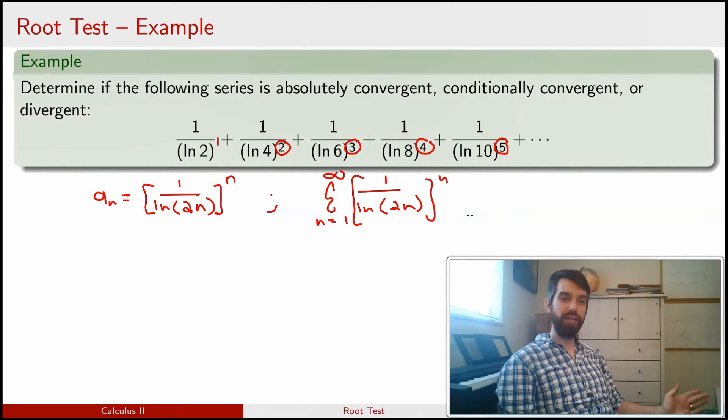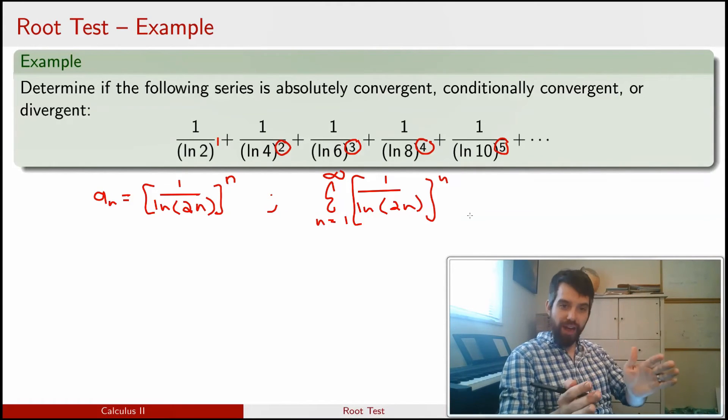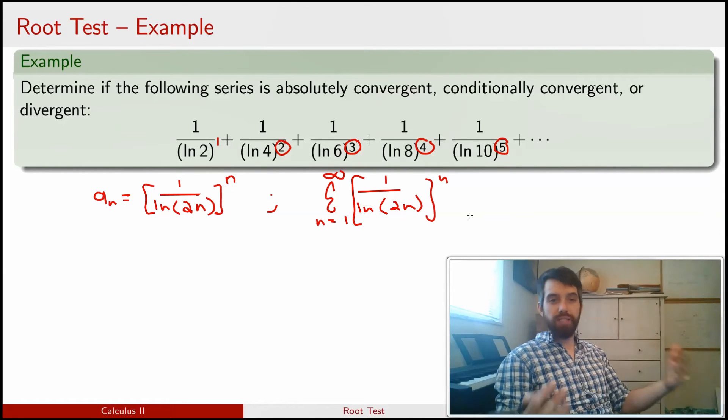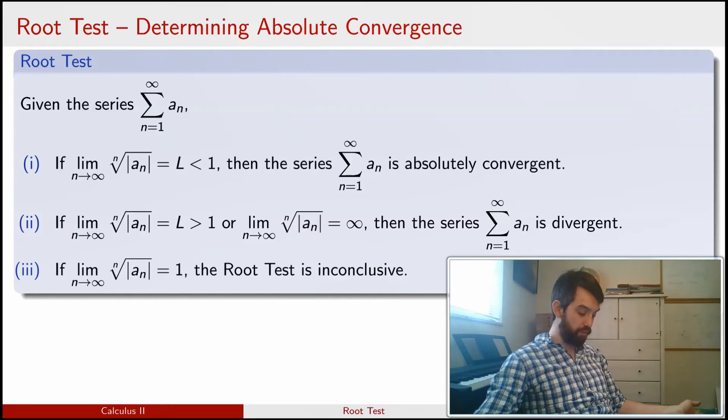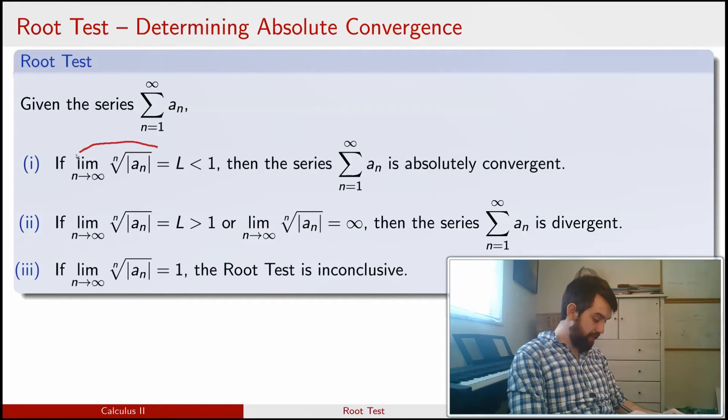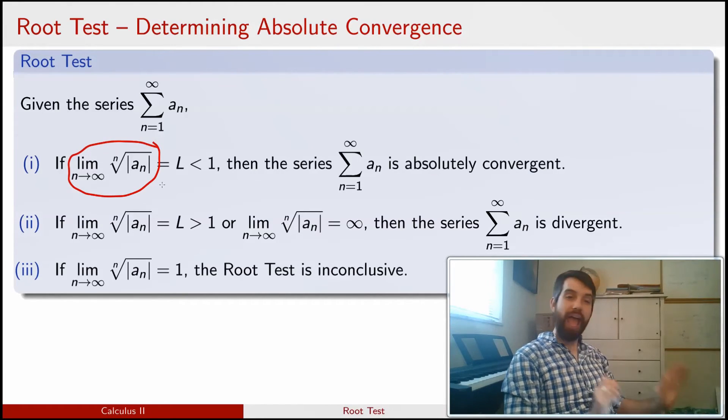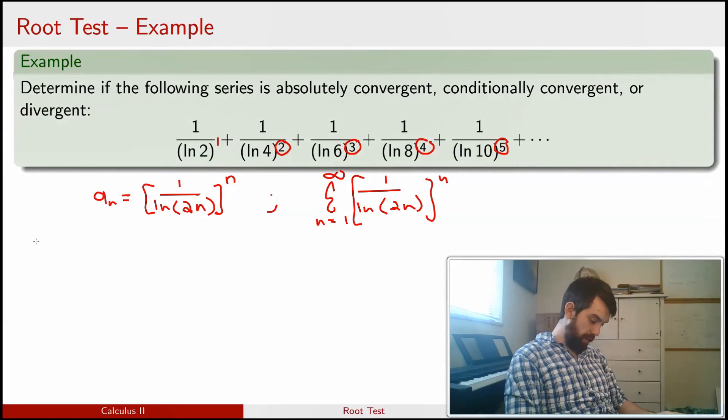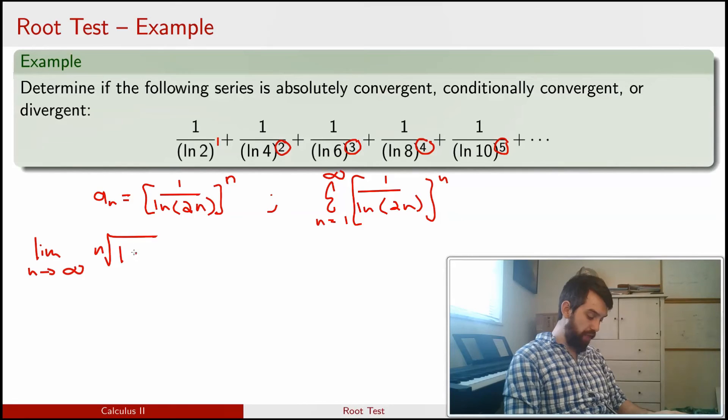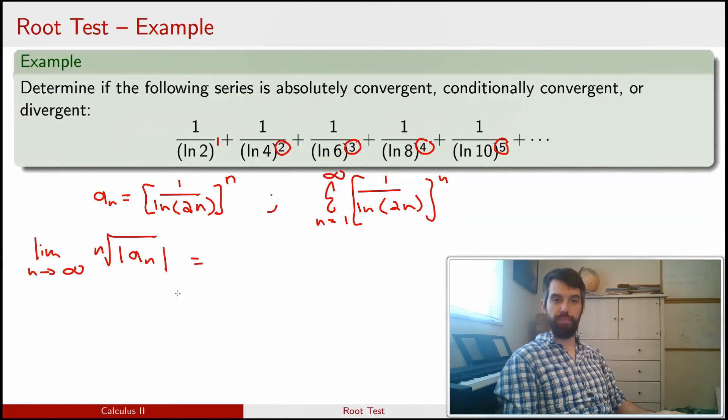So now I've got my series, and I note that because it has this blah to the power of n, it's very well situated to apply the root test. So going back to the statement of the root test, what we're needing to investigate is this limit of the nth root of the absolute value of a_n. I don't have to worry about the absolute values at all. Every one of these terms is positive.